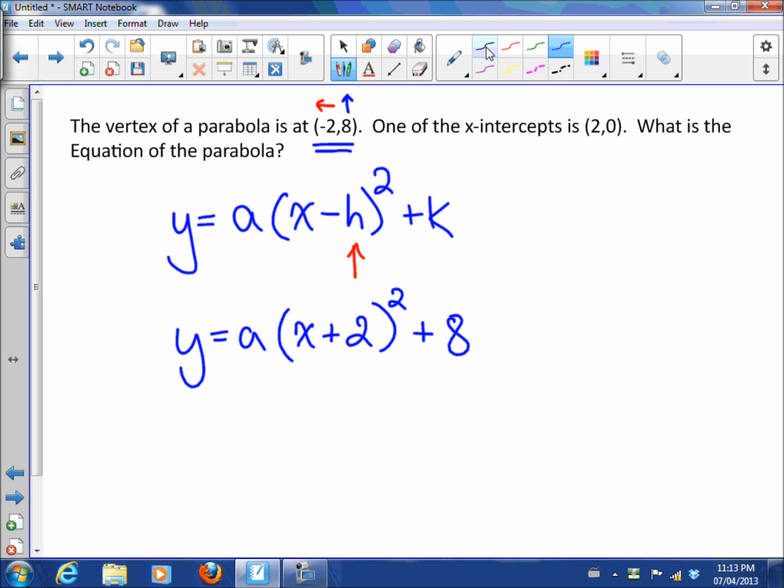So this told us that the parabola moves 2 to the left and then the 8 is 8 up, so plus 8. This tells us 2 to the left, so it moves the vertex to negative 2 and this tells us 8 up, so it moves the vertex 8 up.